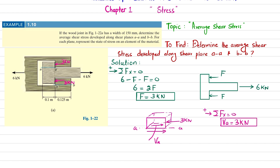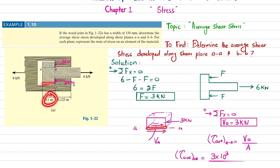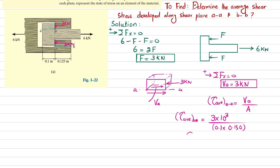The average shear stress at section A-A equals shear force divided by shear area. The shear force is 3 kN, and the shear area is 0.1 m times 0.150 m (the width is 150 mm = 0.150 m). Solving this gives the average shear stress at section A-A equal to 200 kilopascals. This is the answer to the first part.